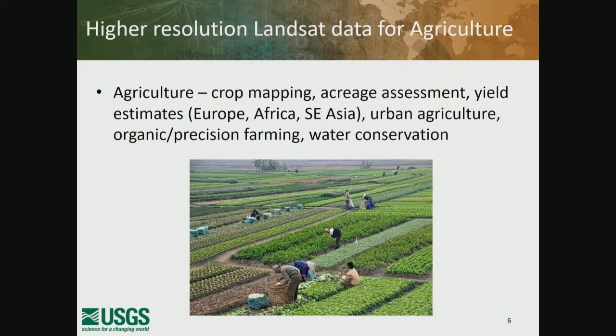We've collected hundreds of user needs and seen common trends. One is the need for improved spatial resolution. For agriculture, improved spatial resolution can increase accuracy for crop mapping, estimation of crop acreage and crop production, and enable urban agriculture and precision farming analysis.